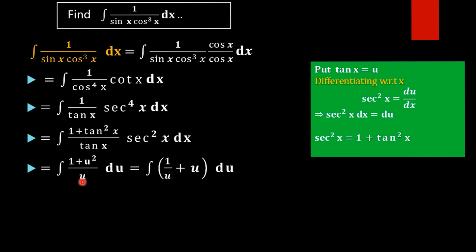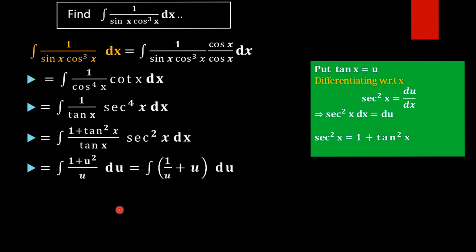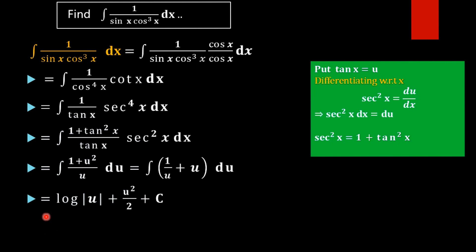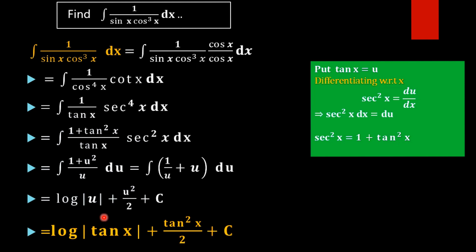On dividing u to the numerator, we get 1/u + u²/u, which gives u. So our function simplifies to the integral of (1/u + u) du. The integral of 1/u is log|u|, and the integral of u is u²/2, plus C. We have the result in terms of u, but we need it in terms of x. Substituting back u = tan x, the final result is log|tan x| + tan²x / 2 + C.